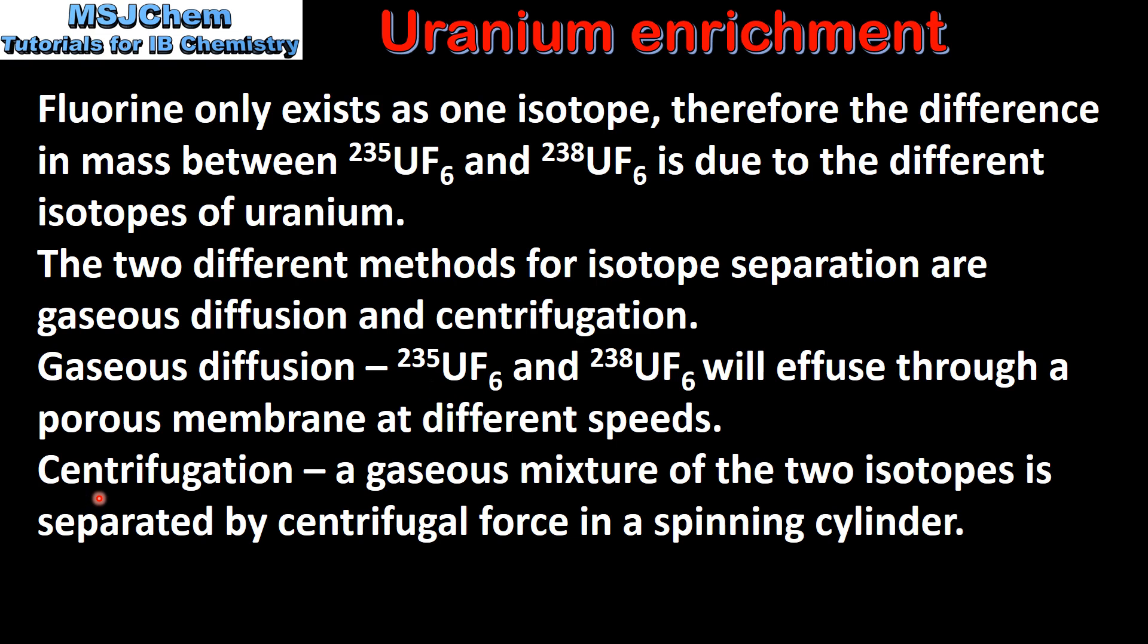The second method of isotope separation is centrifugation. In centrifugation, a gaseous mixture of the two isotopes is separated by centrifugal force in a spinning cylinder.